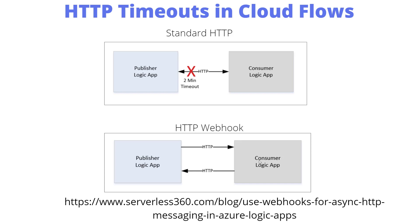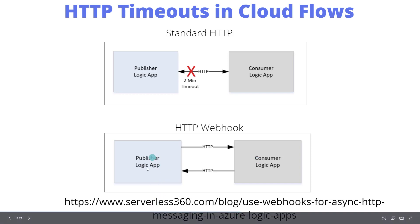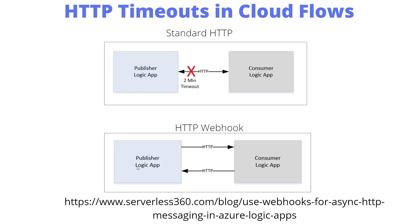Unfortunately we don't have this with Power Automate Desktop. If you think about the difference between cloud flows or Logic Apps and a desktop flow — a desktop flow is running on a device. There isn't an entry point where you could even register this sort of webhook. This works for cloud flows because it's a SaaS service running in the public cloud with a public endpoint. If you were calling something external to your local network where PAD is running, how would it come back in? So there are some architectural constraints there as well.